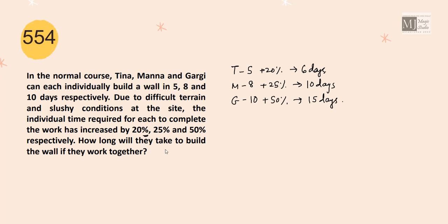How long will they take to build the wall if they work together? And we know the drill. The drill is simple. Just find the LCM, that is common multiple of 6, 10 and 15. That is 30. 30 by 6 is 5. By 10 is 3. By 15 is 2. Add them up. This is 10. That means, T, M, G would take 30 by 10, that is 3 days to complete the work now. And they are working together.